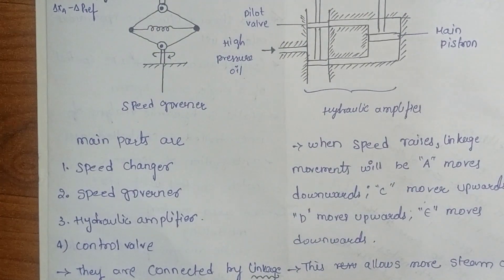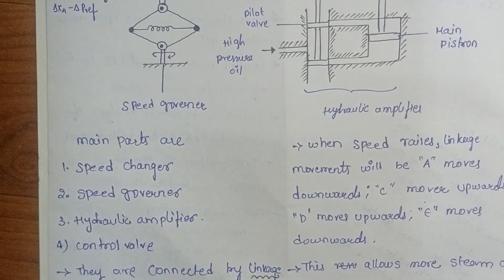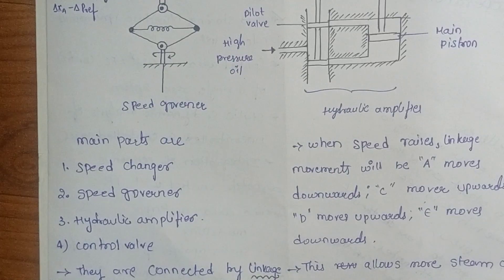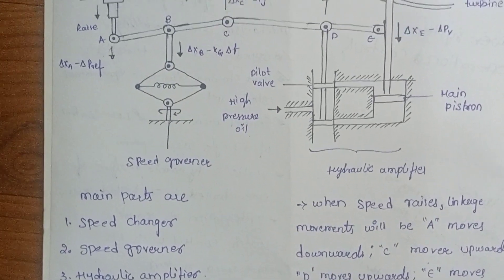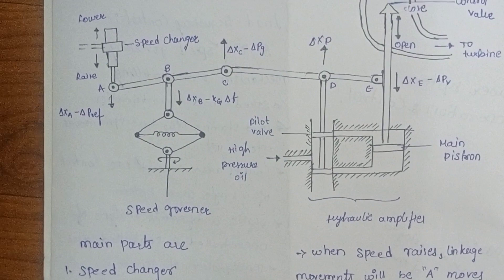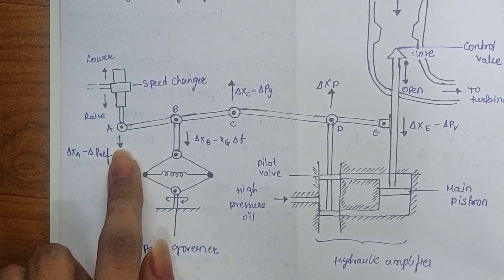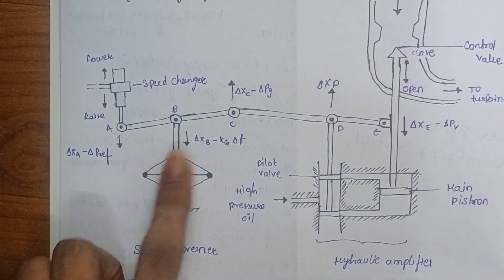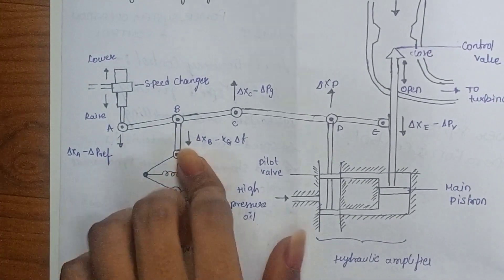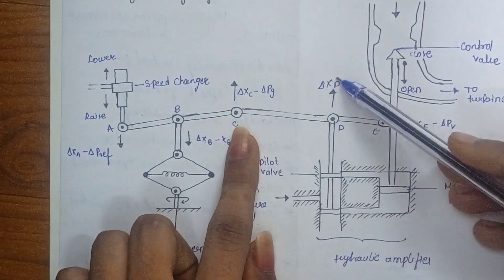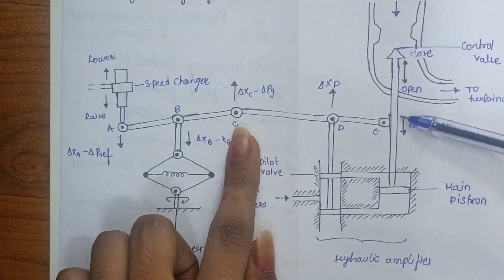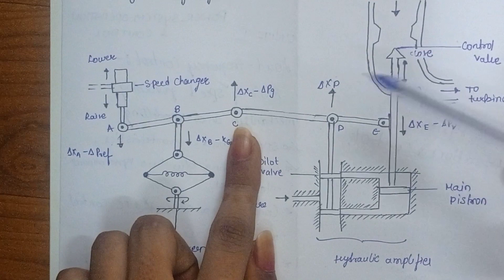The increments and movements are in the vertical position. When speed is raised, the movements at A and B are downwards, so next C and D will be in the upwards direction, and E will be in the downwards direction. This is the speed raise operation.